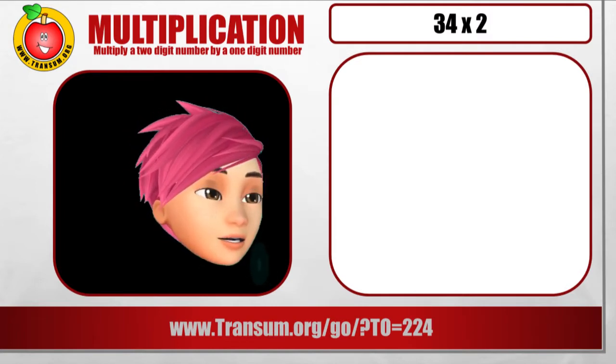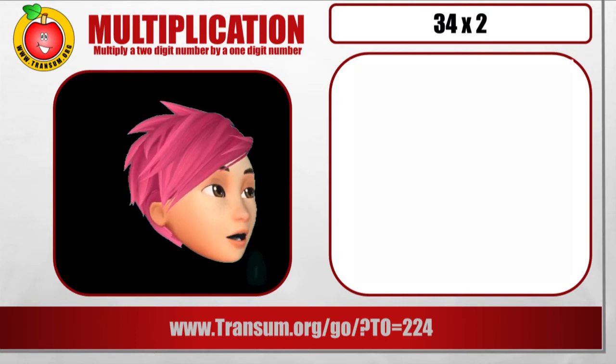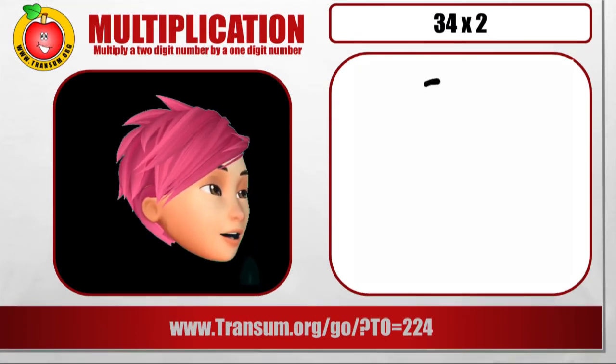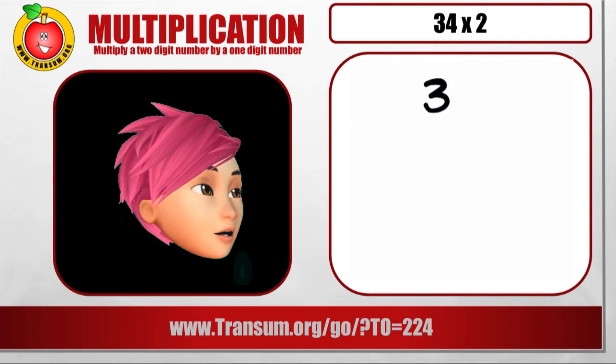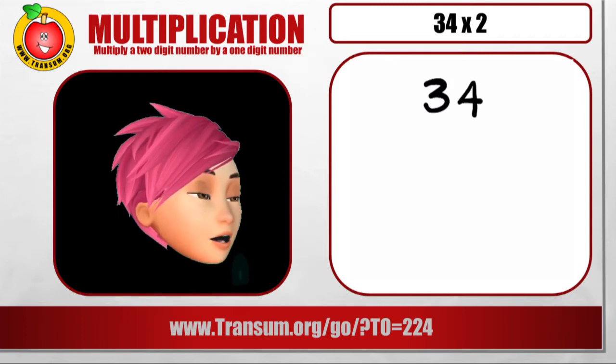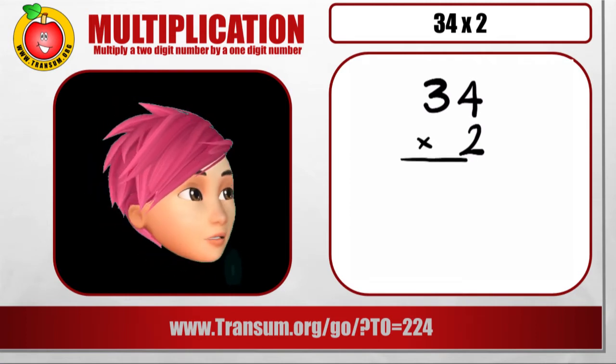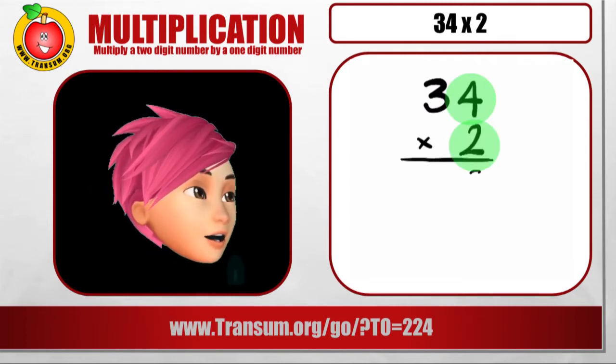34 times 2. So you have to write these numbers down so that the 34 is on top and the 2 is underneath, lining up the ones. Put a multiplication sign, a line underneath,